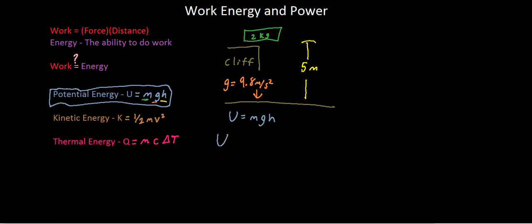And so to solve for this, all we would have to do is plug in our numbers to see what is the potential energy of this box to fall. So we can just plug in our numbers. Mass is 2 kilograms, and we're going to multiply that by our gravity, which is 9.8 meters per second squared.